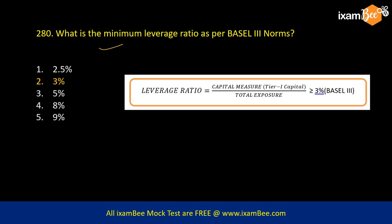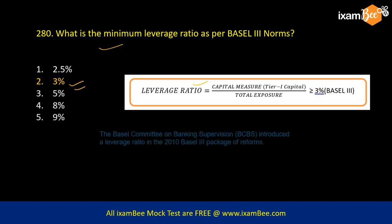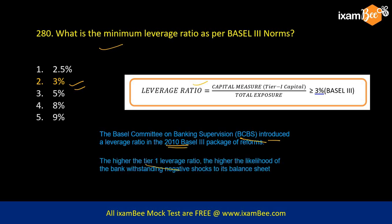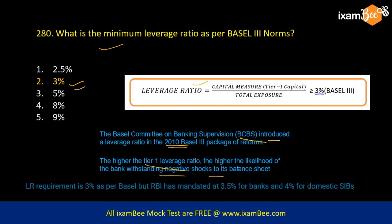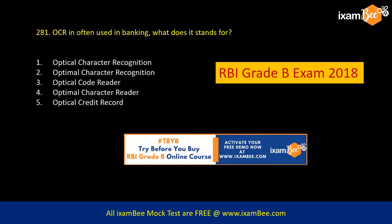The first question I asked: what is the minimum leverage ratio as per the Basel 3 norm? The answer is 3%. Leverage ratio means capital as a percentage of the total exposure of the bank. As per Basel it is 3%, but RBI has made it 3.5% for banks. The Basel Committee on Banking Supervision introduced this leverage ratio in 2010. A higher tier 1 leverage ratio means a higher likelihood of the bank withstanding negative shocks on the balance sheet, because more capital exists against exposure. RBI made it 3.5% for all banks and 4% for domestic SIBs — Systemically Important Banks.